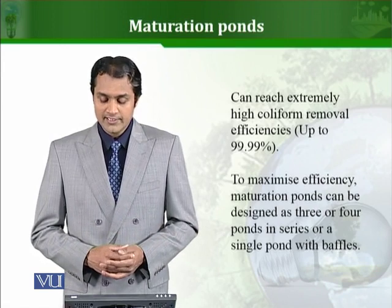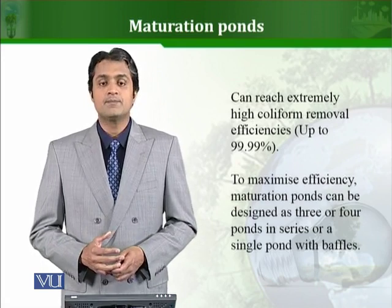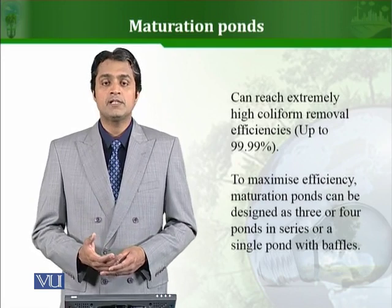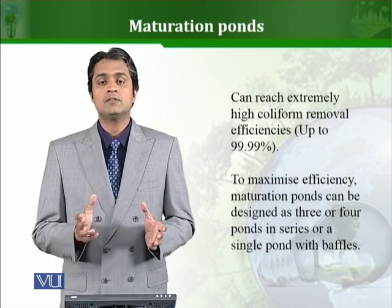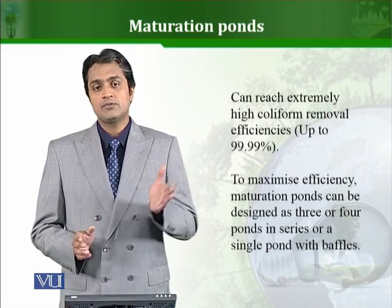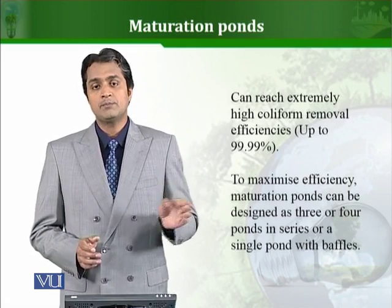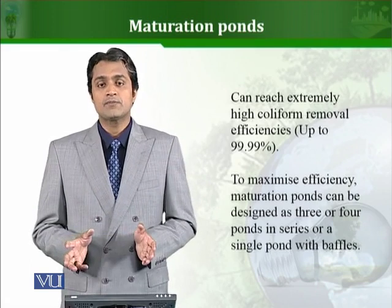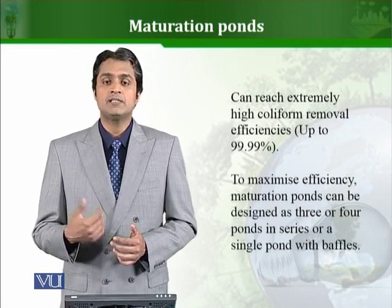To maximize efficiency, maturation ponds can be designed as 3 or 4 ponds in a series, or as a single pond with baffles. We can increase the efficiency of any pond — the same goes with maturation ponds — by introducing some strategies. Either we build 3–4 different maturation ponds interconnected in series so that the pathogen load decreases gradually as wastewater passes through them, or we can have a single maturation pond with baffles so that mixing variation is better and results are more effectively achieved.